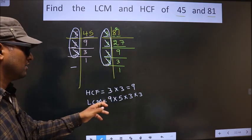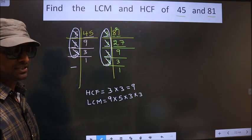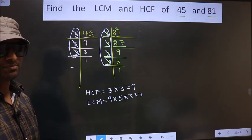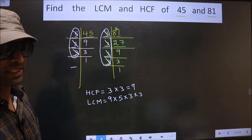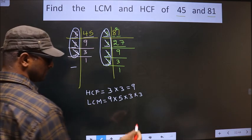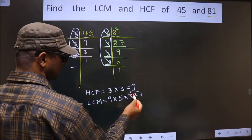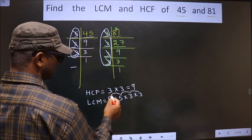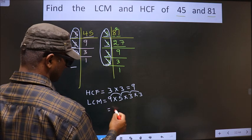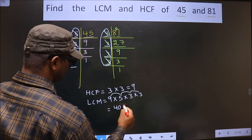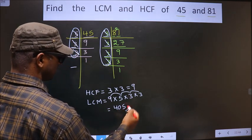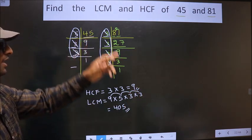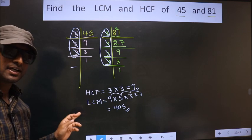So now you multiply all these numbers. Whatever number you get, that is your LCM. So let us multiply. That is 3 times 3 equals 9. 9 times 5 equals 45. 45 times 9 is 405. So this is our LCM and this is our HCF. Am I clear?